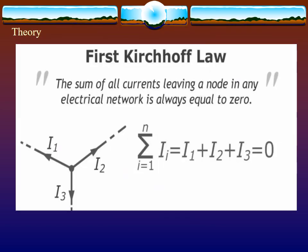The theory: For Kirchhoff's first law, the sum of all currents leaving a node in any electrical network is always equal to zero. Sigma I equals I1 plus I2 plus I3 equals zero.